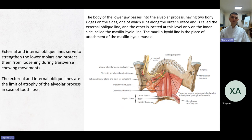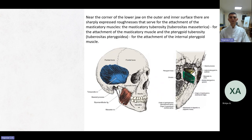The mylohyoid line is the place of attachment of the mylohyoid muscle. External and internal oblique lines serve to strengthen the lower muscles and protect them from loosening during transverse chewing movements. They are also the limit of atrophy of the alveolar process in case of tooth loss. Near the corner of the lower jaw there are roughnesses for the attachment of the masticatory muscles: the masseteric tuberosity for the masseter muscle and the pterygoid tuberosity for the internal pterygoid muscle.